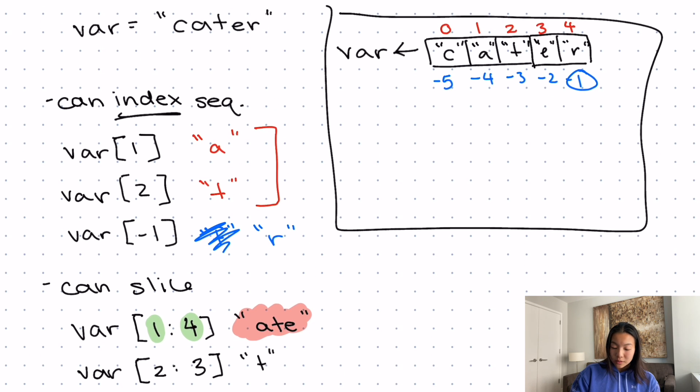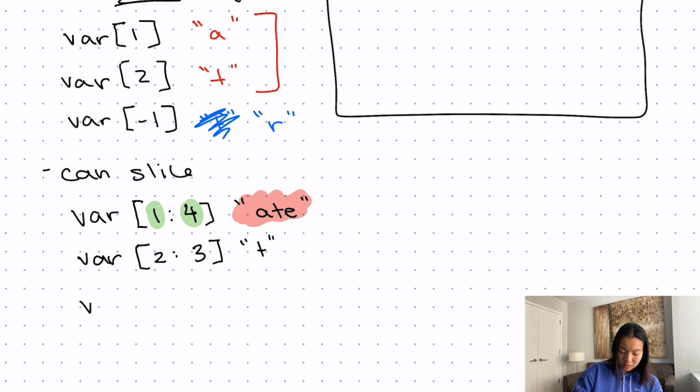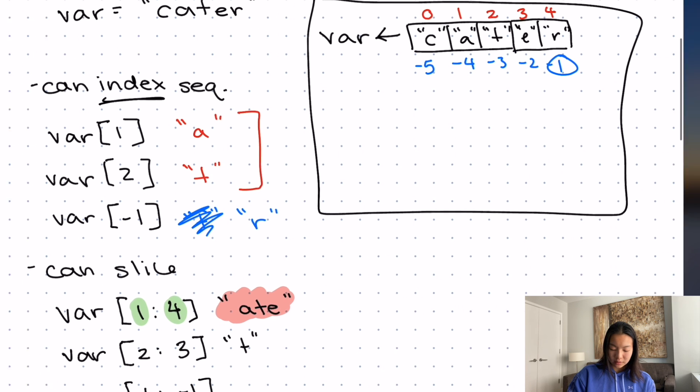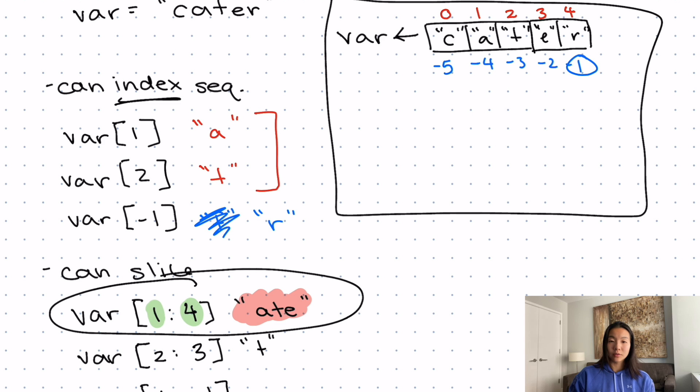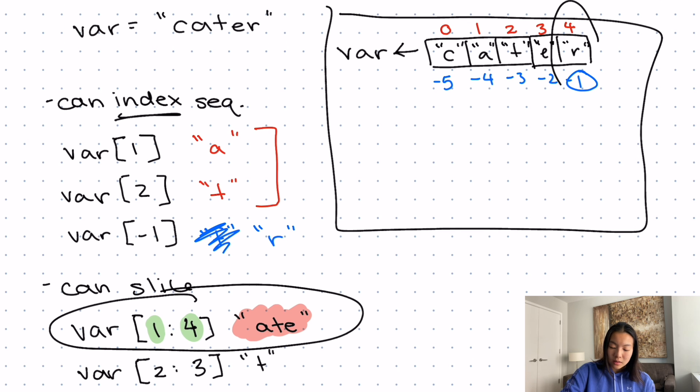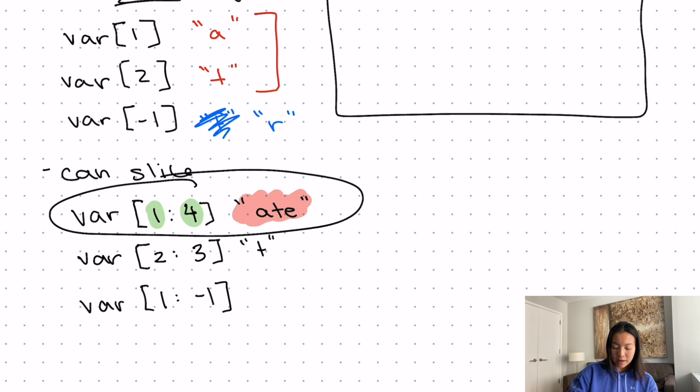We can also take the negative indices, that's okay too. So if I did variable one until negative one, this is actually equivalent of this over here, because the negative first and the fourth in this specific case are the same box. So this down here would actually also be ate.